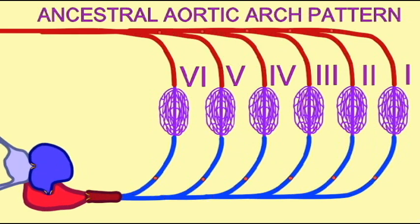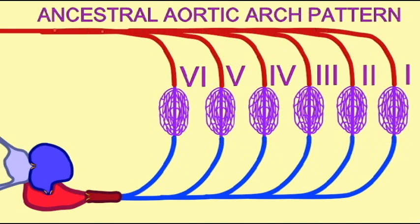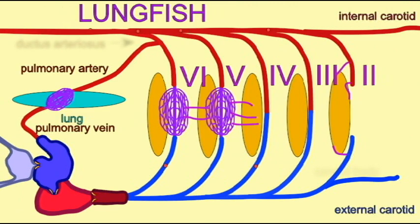The embryos of all vertebrates, even the vertebrates which live on land, develop a series of six aortic arches which then are modified. And so whether it be reptiles, birds, or mammals, the same aortic arches and the same circulatory pattern develops in mammals as is found in fish.